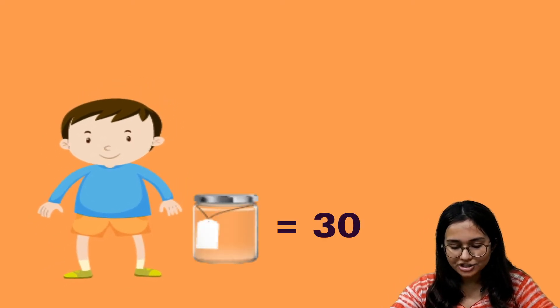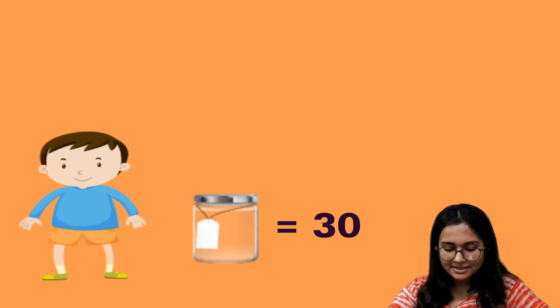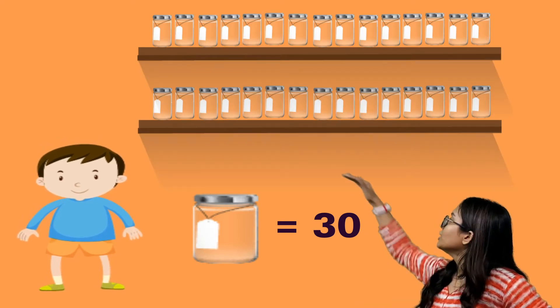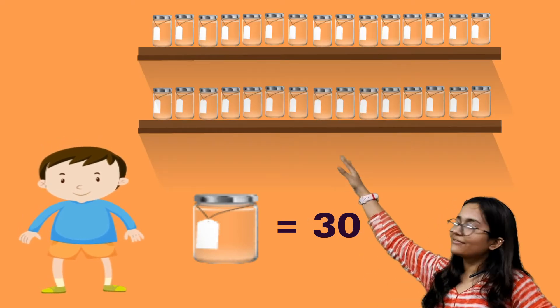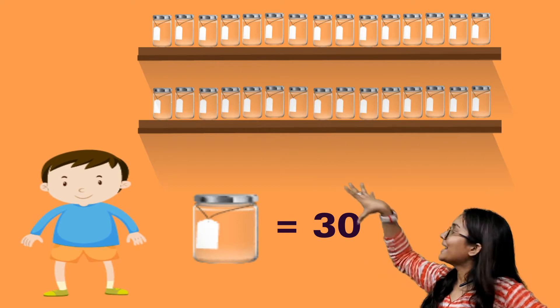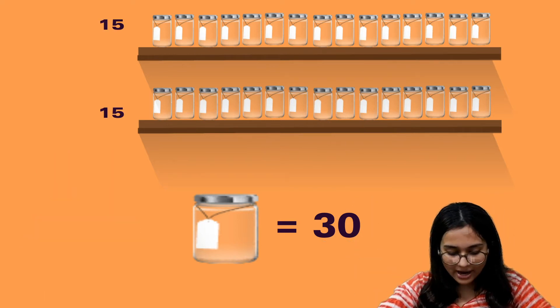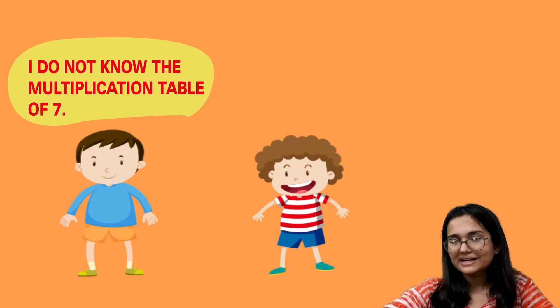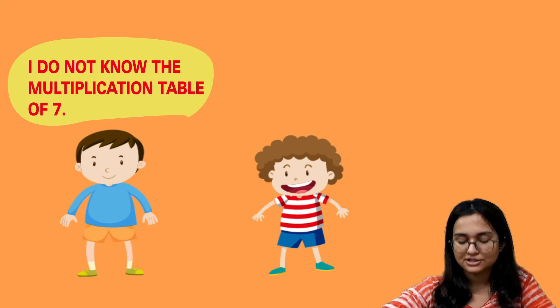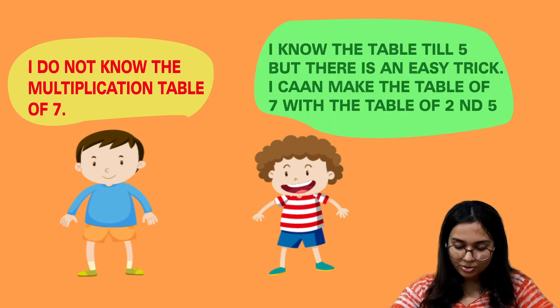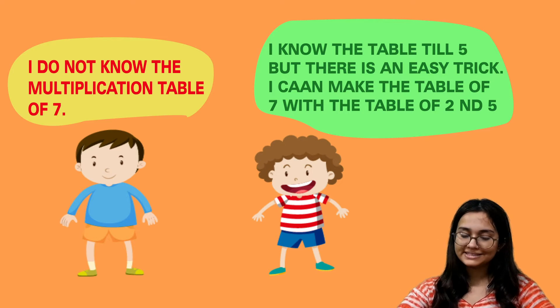Now Bhima made a shelf for 30 jars. It was a long shelf with 2 racks, so 15 jars in each. Now someone said he does not know the multiplication of 7. To that, Guddu replied: I know the tables till 5, but there is an easy trick.